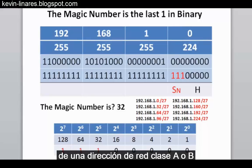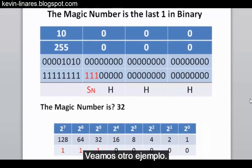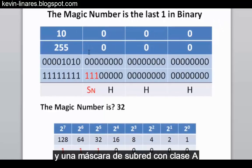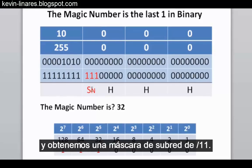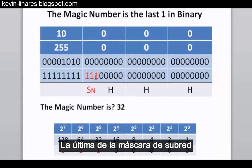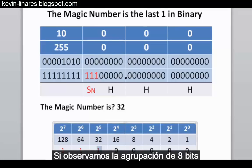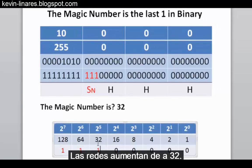What about when we're subnetting from a Class A or Class B network address in the other octets? Let's look at another example: we have a 10.0.0.0 network address with a classful Class A subnet mask, and we're going to subnet it. We've borrowed 3 bits, giving us a slash 11 subnet mask. The last one in the subnet mask is still in the 32s place in this 8-bit grouping.